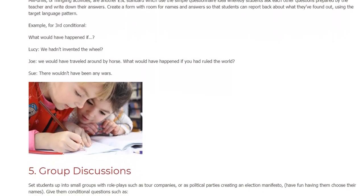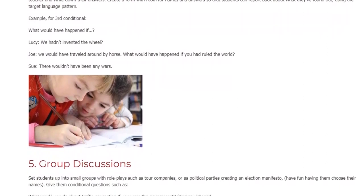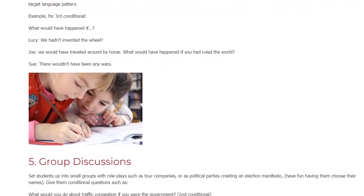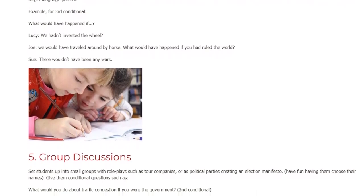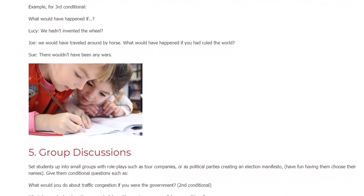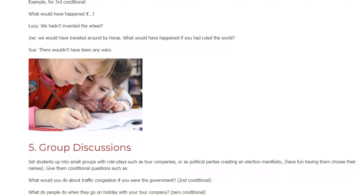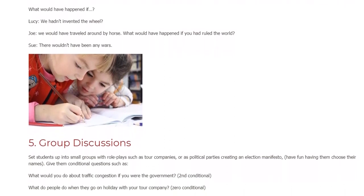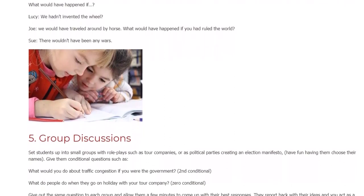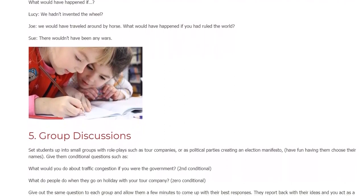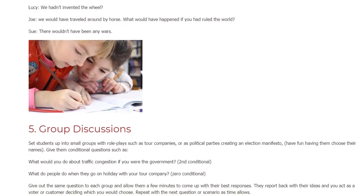Example for third conditional – 'What would have happened if...?': Lucy: 'We hadn't invented the wheel?' Joe: 'We would have traveled around by horse.' 'What would have happened if you had ruled the world?' Sue: 'There wouldn't have been any wars.'